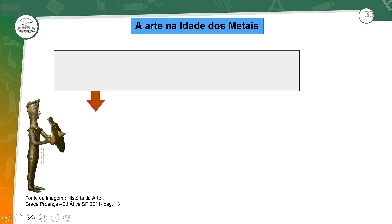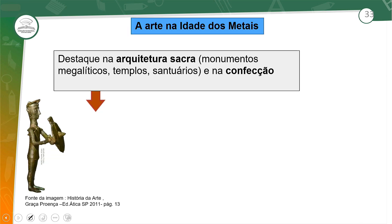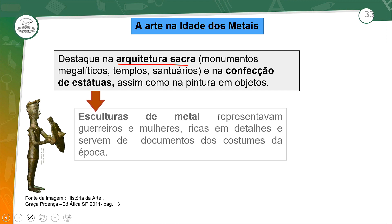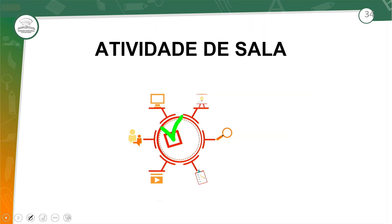Na Idade dos Metais, período já mais avançado da sociedade, destacou-se a arquitetura sacra por meio de monumentos. Também esculturas de metal que representavam guerreiros e mulheres da sociedade. Esses foram os três períodos que destacamos para falar da arte rupestre.